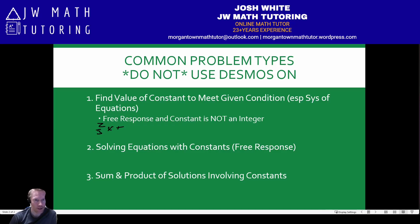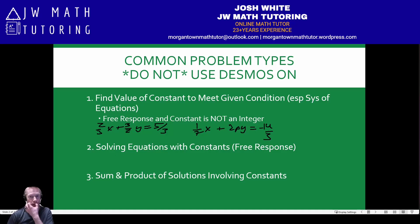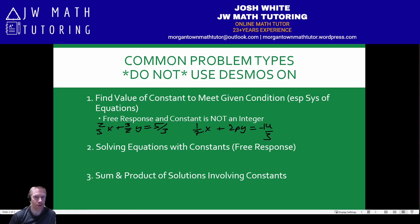For example, it might be something like two-thirds X plus three-halves Y equals five-thirds, and then there's another equation like one-seventh X plus two P Y equals negative fourteen-thirds. And it would ask: what is the value of P such that the system of equations has no solution, or such that the system of equations has infinite solutions?